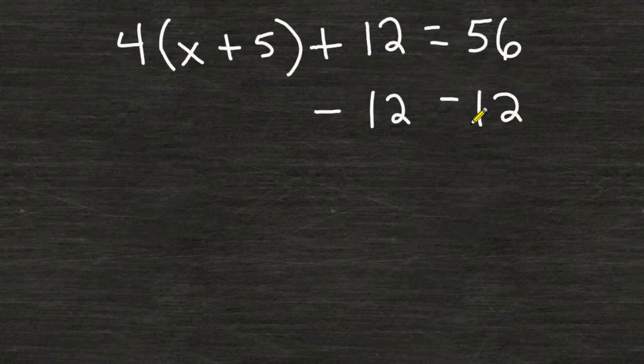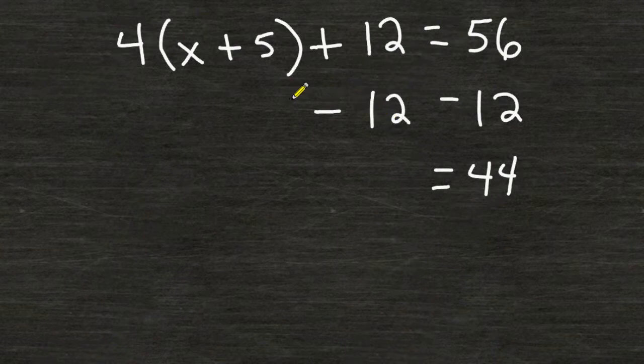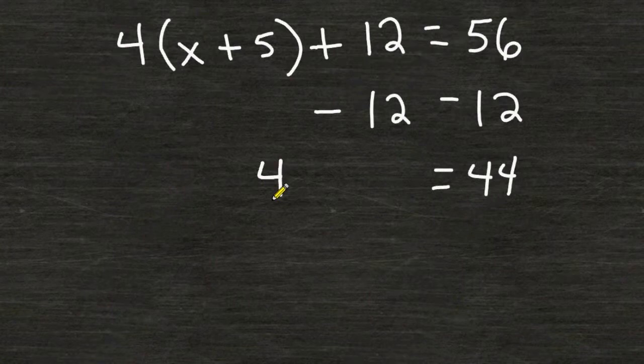56 take away 12 is equal to 44, and remember to bring down your equal sign, and then bring down everything else on the left hand side of your equation that you did not touch. So we have to bring down the 4 times the quantity x plus 5.